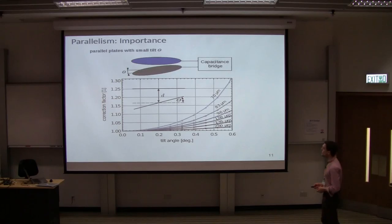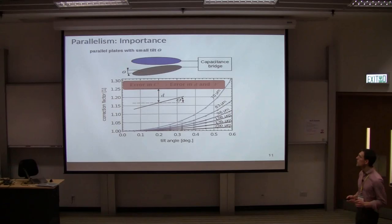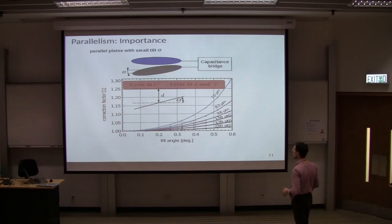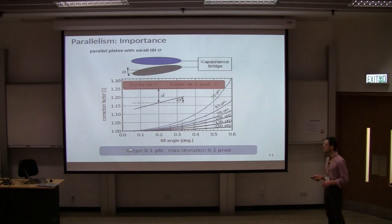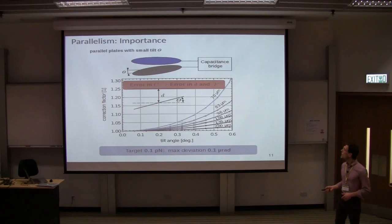Okay. Why would you need parallelism anyway? Well, if you calculate the capacitance which you have between the plates for certain tilt angles at certain distances, you see that there is quite large influence. And there is a problem because we measure the force and the distance capacitively. So if you have an error in C, in the capacitance, then you also have an error in distance and you also get an error in the force which you don't want. And if you make the math and you have a look at what you actually need in order to be able to be sensitive enough to have 0.1 piconewtons accuracy, then you see that you need 0.1 microradian. To give you an idea, that's about 0.1 millimeter on the length of a soccer field. So that's really not a lot.